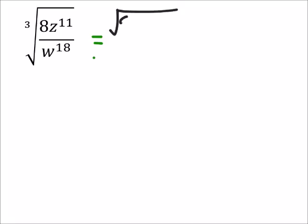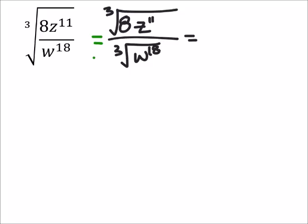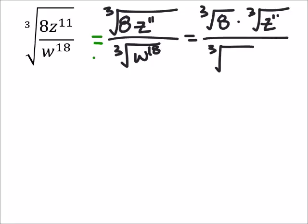I'll make this the cube root of 8 times z to the power of 11, all over the cube root of w to the 18th. The numerator can break up into multiplication, giving me the cube root of 8 times the cube root of z to the power of 11, divided by the cube root of w to the 18th.